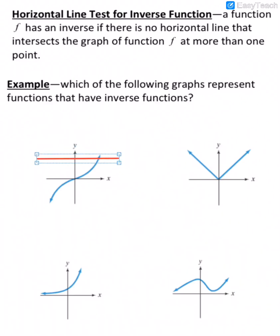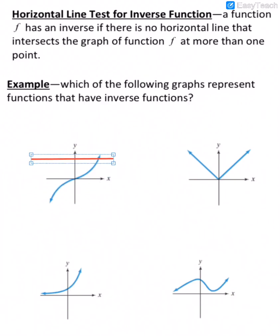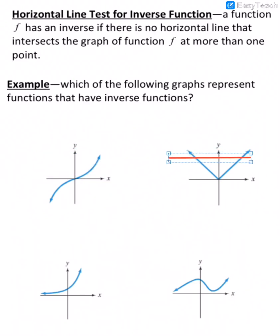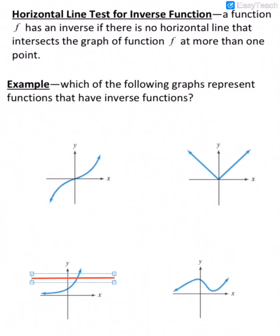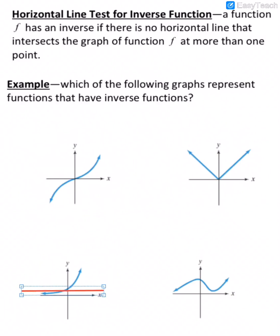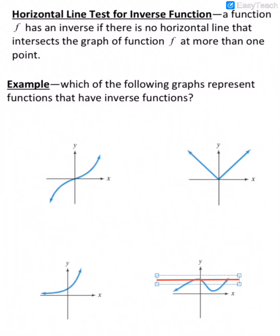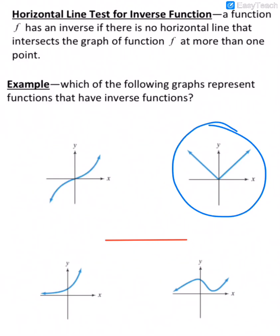Let's test this. Would this graph have an inverse function? Yes, because it only touches the horizontal line in one spot at a time. What about this one? No, it would not have an inverse that's a function. What about this one? Even though it might seem to touch in more than one spot, it's slanted so it doesn't — and neither would this one. So all of these would have inverses that are functions, except for that one.